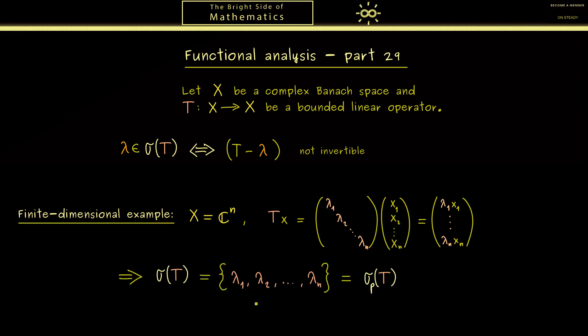Now please remember that we learned in the last video that in the finite-dimensional case all the points in the spectrum are eigenvalues. So the spectrum is equal to the so-called point spectrum. Indeed in this simple case here we can immediately write down the eigenvectors. They are just given by the standard basis in ℂⁿ.